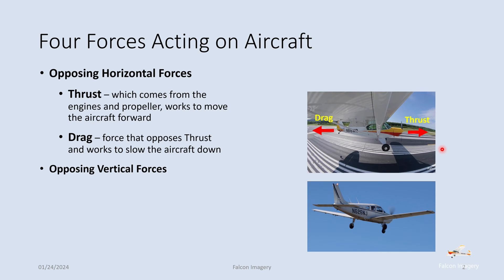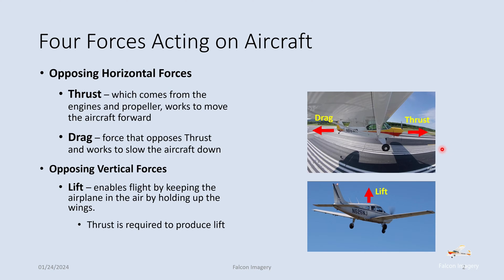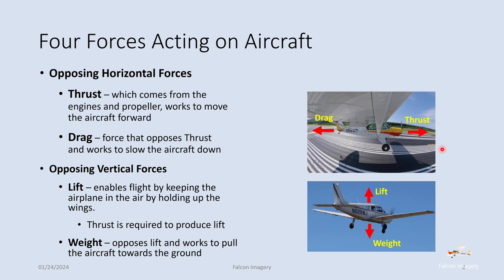In the vertical axis, we've got two opposing forces as well. We have lift, which enables flight by keeping the airplane in the air by holding up the wings. And thrust, by the way, is required to produce that lift. And then we have weight, which opposes lift and works to pull the aircraft towards the ground. Notice we didn't say gravity — weight is a function of the mass of the object multiplied by the gravitational pull of the earth. So it's actually weight, not gravity or mass, that is the vertical force pulling the aircraft down toward the ground.